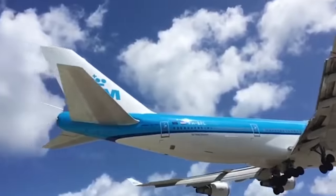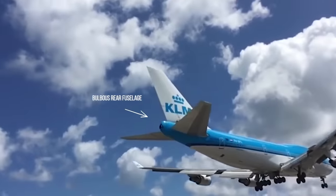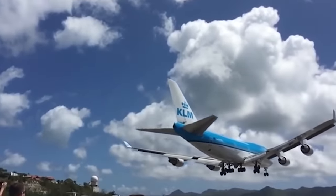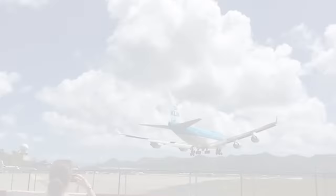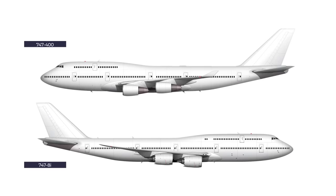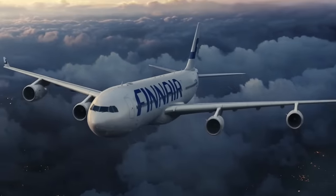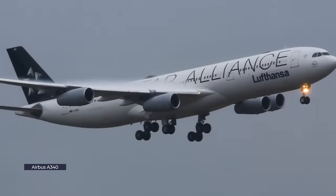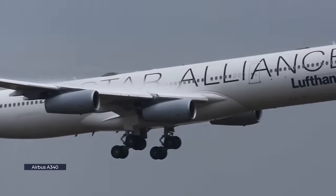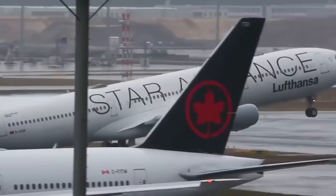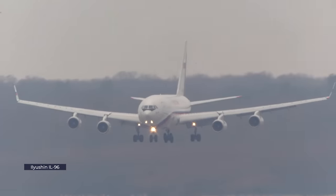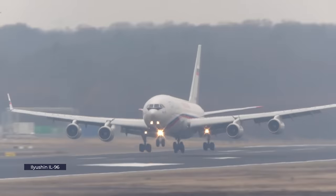From behind, the 747's bulbous rear fuselage is also quite distinctive. Looking at the two latest variants — the Dash 400 and the Dash 8 — the older Dash 400 has winglets and four conventional-looking engines, while the newer Dash 8 is characterized by a longer upper deck, a lack of winglets, and engines with chevrons. The other four-engine aircraft in regular commercial service is the Airbus A340. With only one row of windows going from cockpit to tail, it's almost certainly an A340 if you're outside Russia. The A340 has four-wheel main landing gears under each wing, with an additional central landing gear.